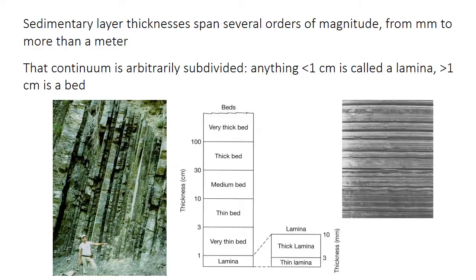Sedimentary rocks are nearly always layered at some scale. As we saw in the previous set of slides, that layering arises because of changes in flow velocity and therefore changes in the type of sediment it's able to transport. The thicknesses of sedimentary layers can range from millimeter scale or even less to several meters, although most are on the order of a few centimeters to maybe a meter. We subdivide that continuum somewhat arbitrarily into laminae, defined as less than a centimeter thick, and beds, defined as greater than a centimeter thick.